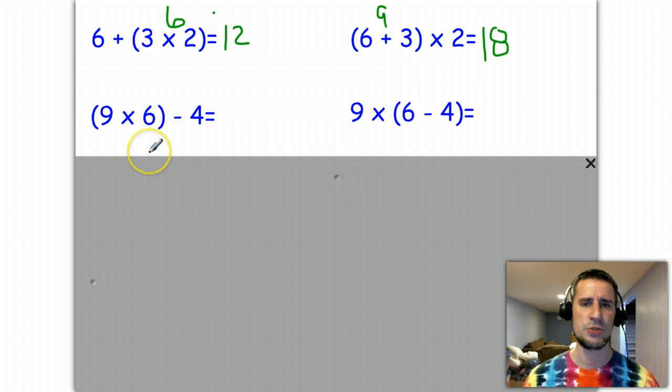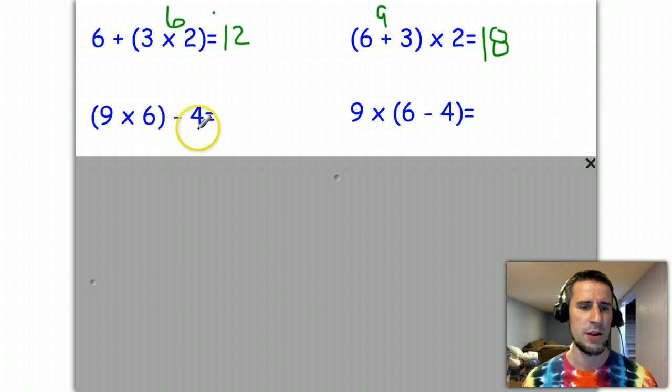Let's do one more. This time let's try subtraction. Okay, we got 9 times 6 minus 4, same number sentences on both sides, parentheses in different place. 9 times 6 will give you that 54 that you're looking for. And then we're taking away 4, so here you've got 50.